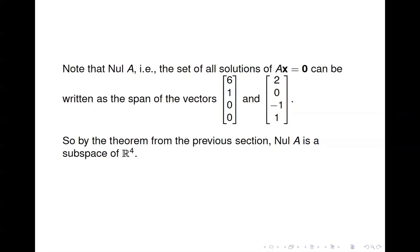If you remember the theorem from section 4.1, it said that if you can write your set as the span of a finite set of vectors, then it's automatically a subspace of that parent vector space. So here we've written the set of solutions to Ax = 0 as the span of two vectors, and therefore the null space of A is a subspace of ℝ⁴.